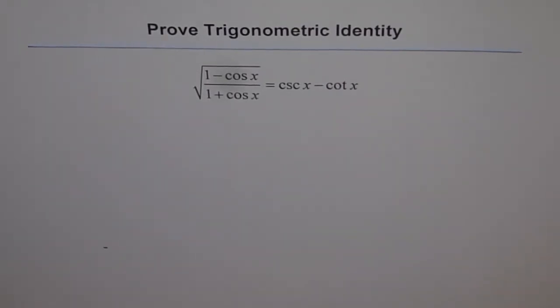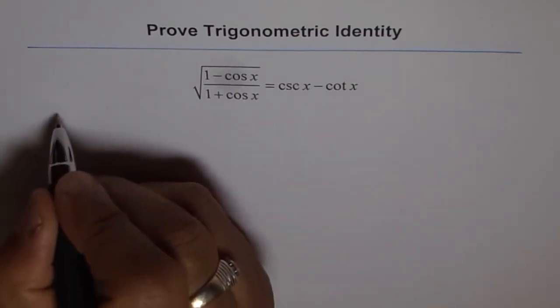Prove trigonometric identity: square root of 1 minus cos x divided by 1 plus cos x equals cosecant x minus cotangent x. Okay, let's start from the left side.